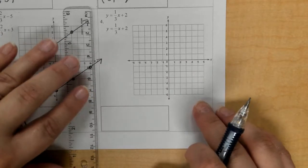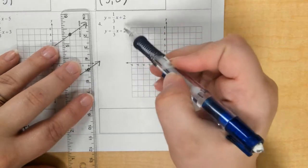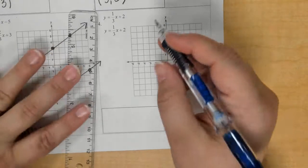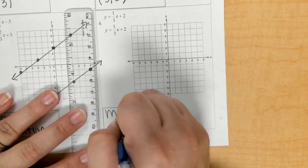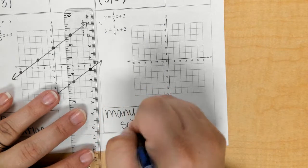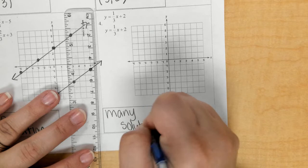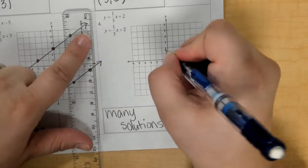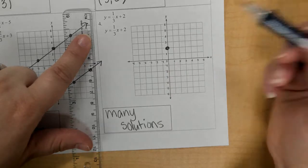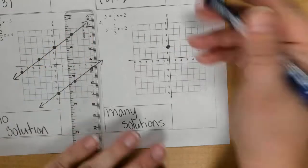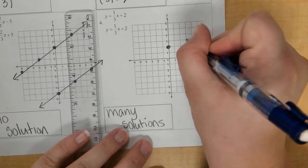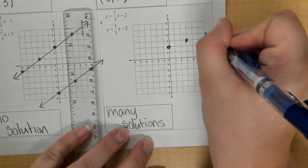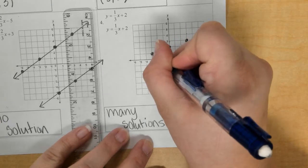In number 4, we have the exact same equations. That means you have the same line, which is many solutions. We'll start at positive 2. The slope is 1 third, so I will rise 1 and run 3. Also down 1, left 3.